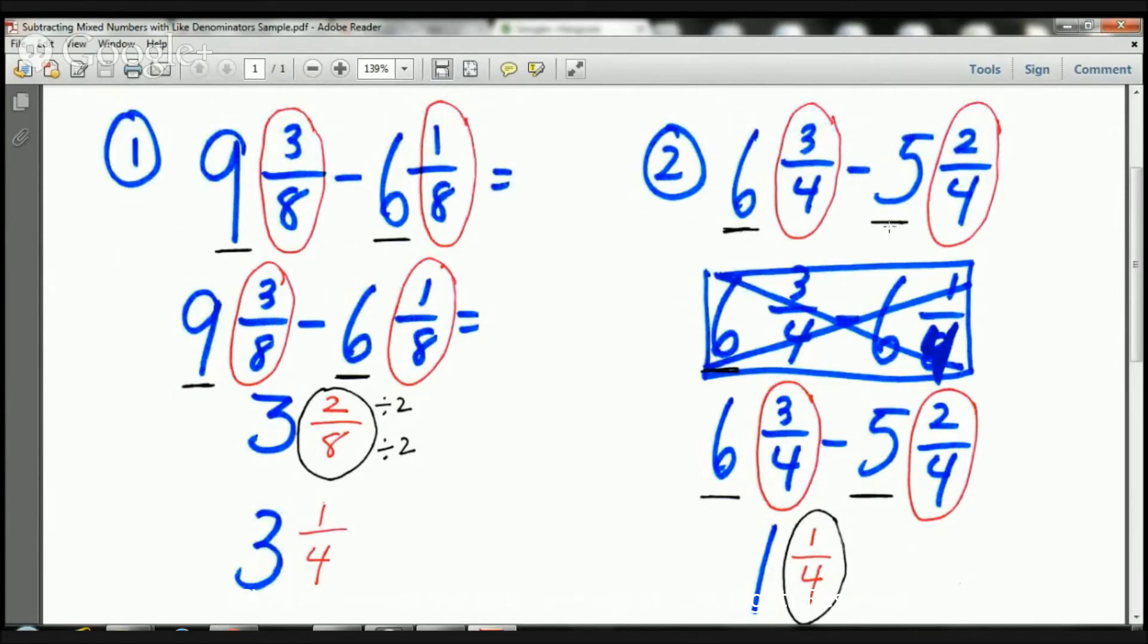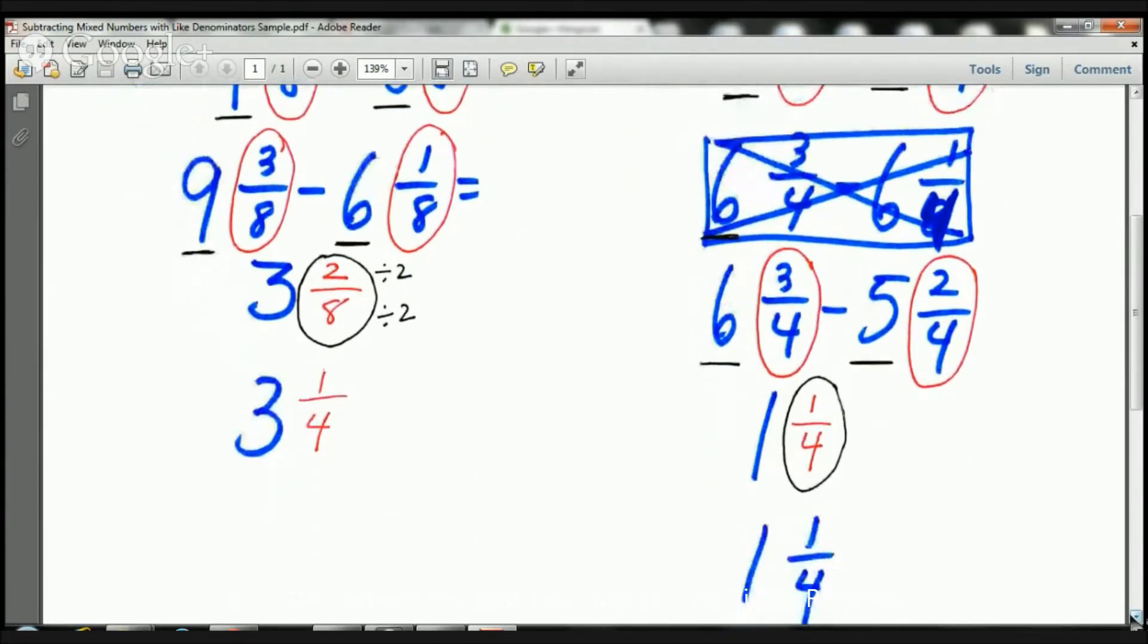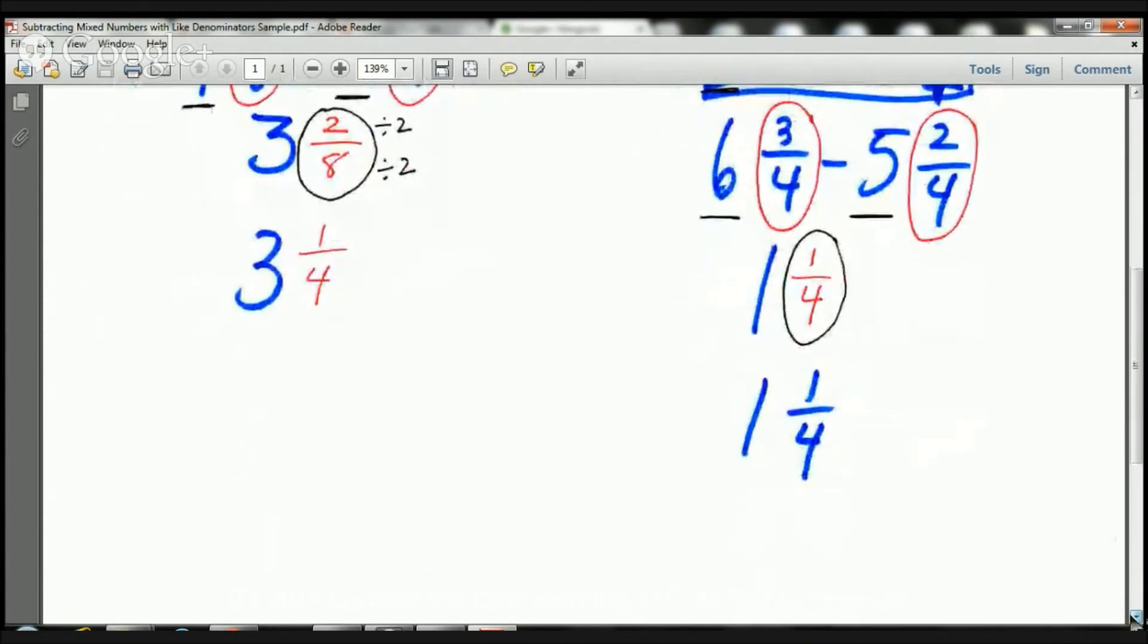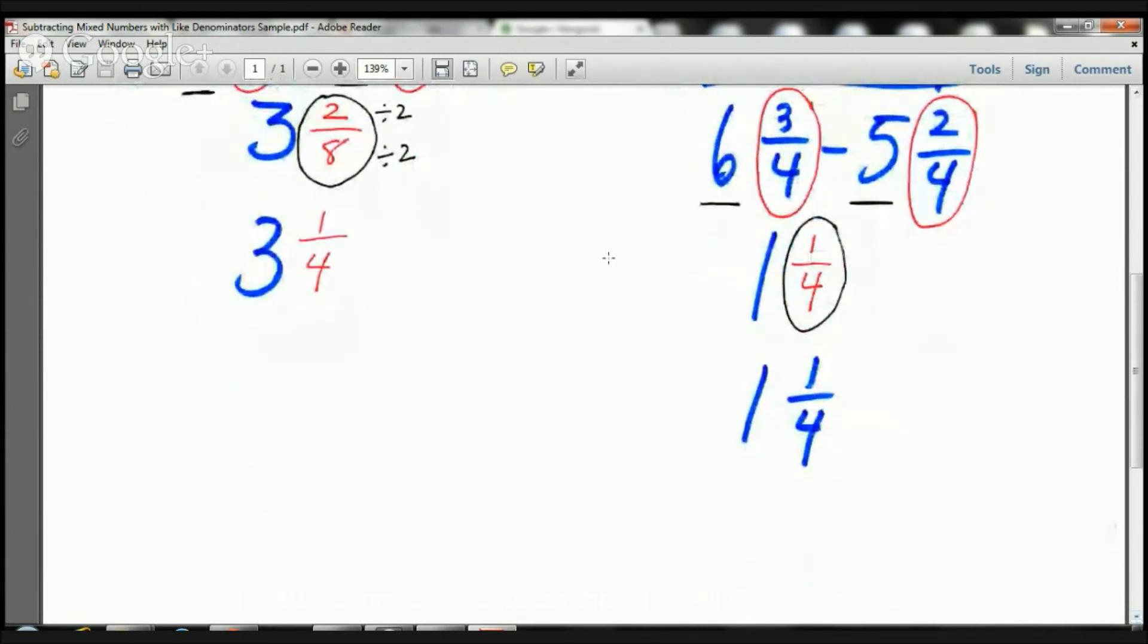Now again, I made sure that I made it clear what the whole numbers are. So the whole numbers are 6 and 5. So let's just move down. So now that I have it established, I can just do 6 take away 5 as 1.